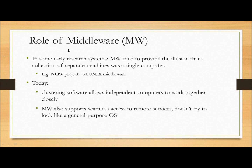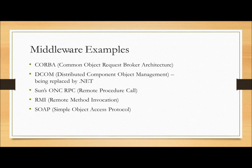Now, the role of middleware. In some early research systems, middleware tried to provide the illusion that a collection of separate machines was a single computer — for example, the Glen Unix middleware project. Today, clustering software allows independent computers to work together closely. More often, middleware also supports seamless access to remote services without trying to look like a general purpose OS. Middleware examples include CORBA (Common Object Request Broker Architecture), DCOM, SANS ONS RPC, RMI, and SOAP.